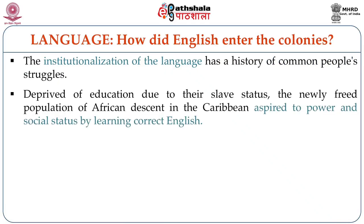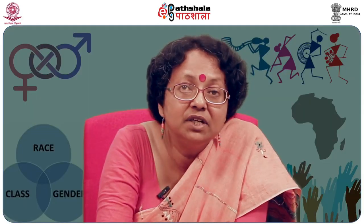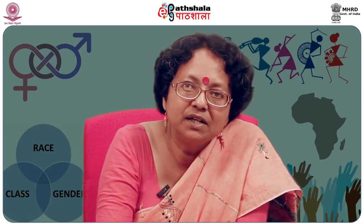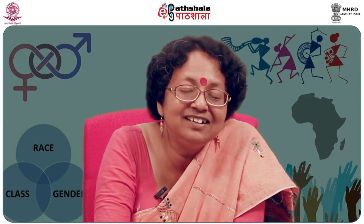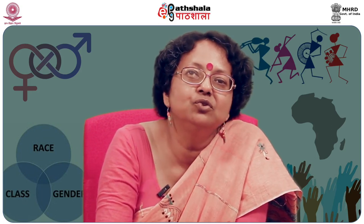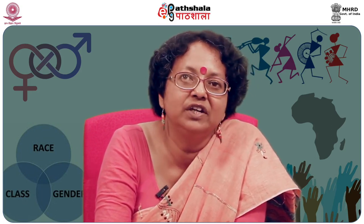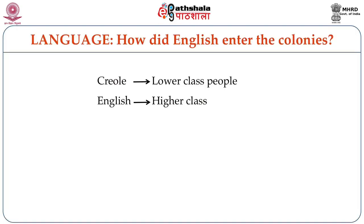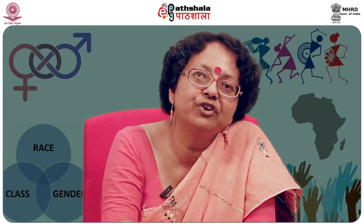Deprived of education due to their slave status, the newly freed population of African descent in the Caribbean aspired to power and social status by learning correct English. That immediately created a rift in the society — amongst the higher class of freed slaves who could afford or who were given an English education, and those who were not. So Creole was identified with the lower classes and the poor, and English was identified with the higher classes who were closer to the colonizer.